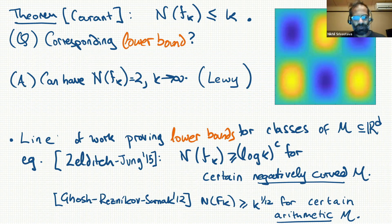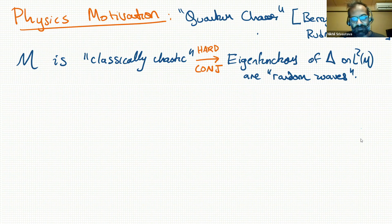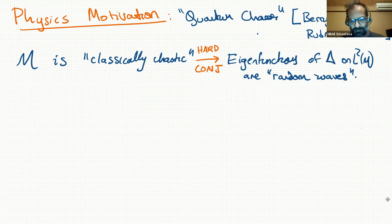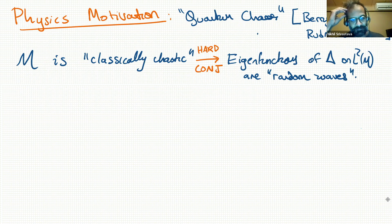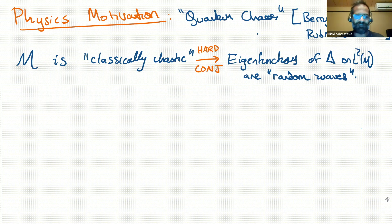One motivation for this type of question comes from quantum chaos. Roughly, if you have a physical system where the classical dynamics are chaotic, this should appear in the quantum description. One of the guiding conjectures is Berry's conjecture, refined by Rudnick and Sarnak, which says that if you have a classically chaotic manifold, the eigenfunctions of the Laplacian should behave like random waves — manifesting this chaos in a very particular way.